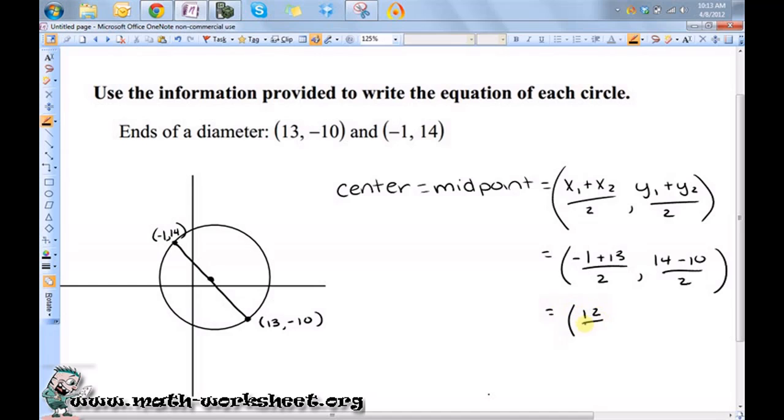So it's 12 over 2 comma 4 over 2. Okay, so the center is 6, 2. So that's half of the battle.